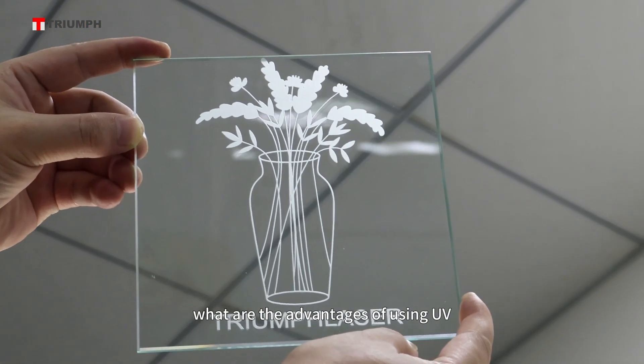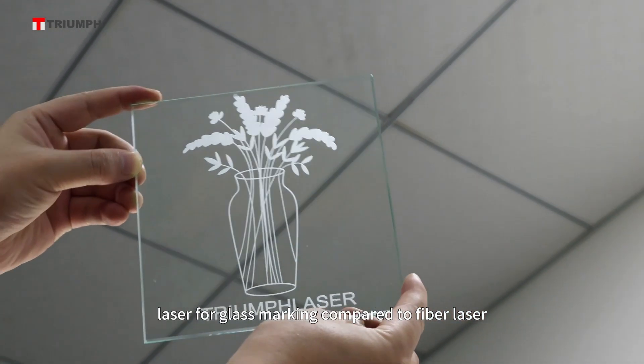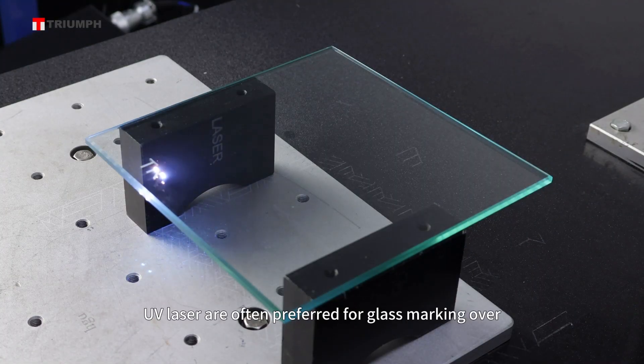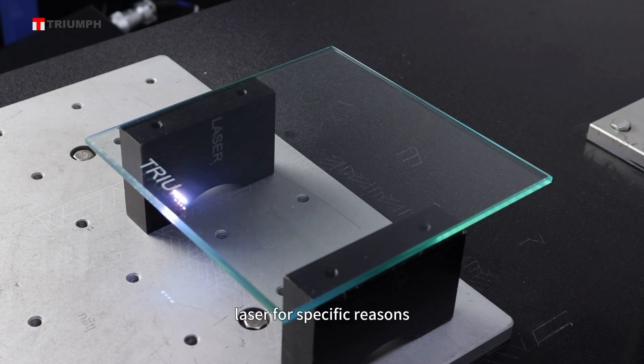What are the advantages of using UV laser for glass marking compared to fiber laser and CO2 laser? UV lasers are often preferred for glass marking over fiber laser and CO2 laser for specific reasons.